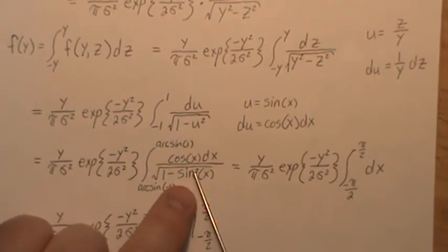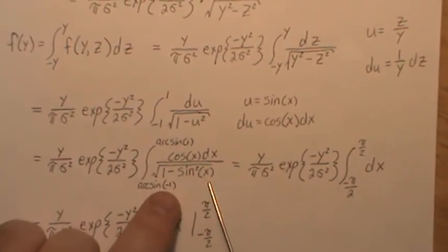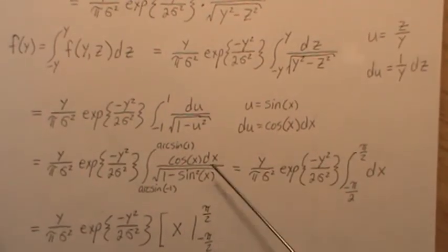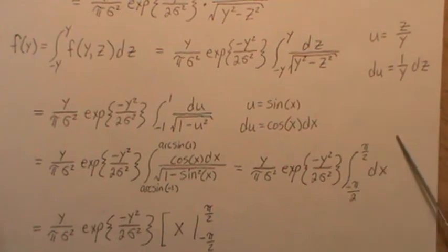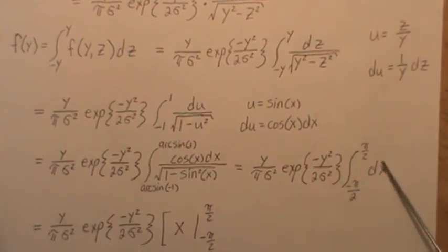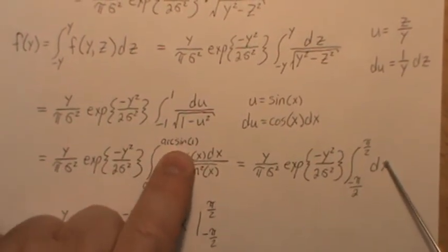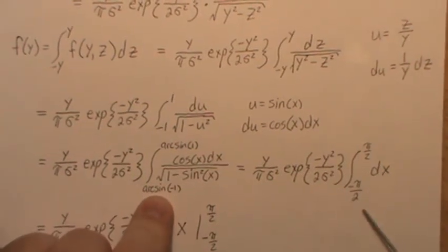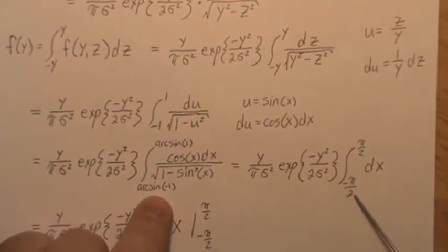Sines, 1 minus sine squared, cosine squared. But now look at this. 1 minus sine squared is cosine squared. Square root, that's cosine. So the cosines cancel. And we're left with just this. And I went ahead and put in this. Arc sine of 1 is pi over 2. Arc sine of minus 1 is minus pi over 2.